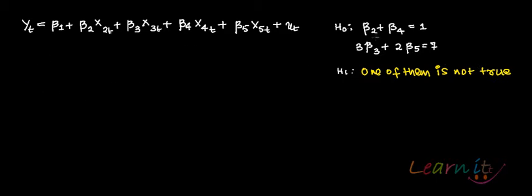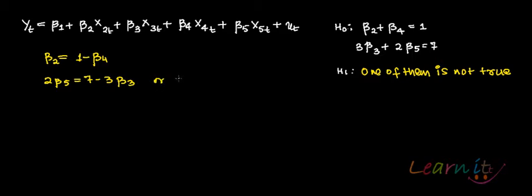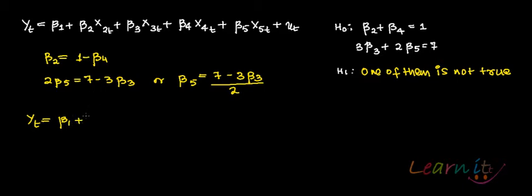For example, if you look at it, your beta 2 can be written as 1 minus beta 4. And for the second restriction, 2 beta 5 equals to 7 minus 3 beta 3, or beta 5 equals to 7 minus 3 beta 3, divided by 2. So what you can do is substitute these values into the model. So yt equals to beta 1 plus — in place of beta 2 — write 1 minus beta 4.